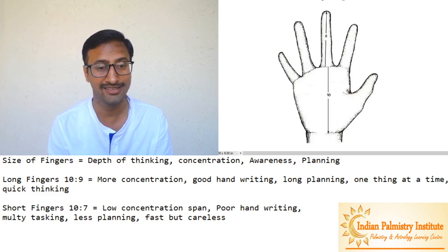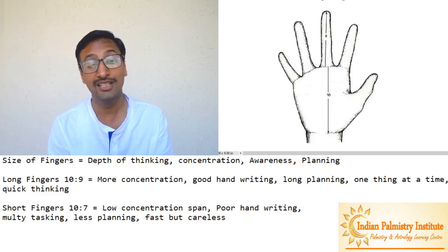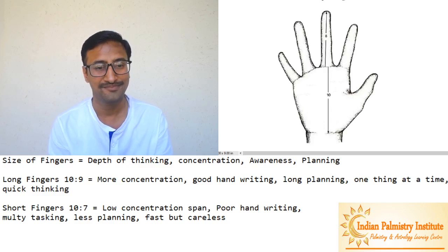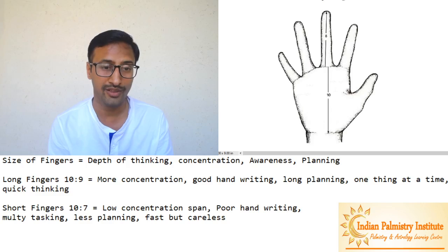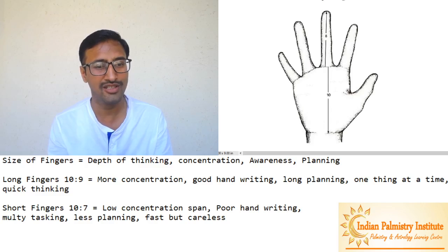It's possible they will read one chapter of this book, then they feel bored, leave it, it's difficult, let's start another one. They are doing many things at the same time. And generally the handwriting is poor as compared to people with long fingers because they want to do it quick, less thinking, less concentration they are putting into it.